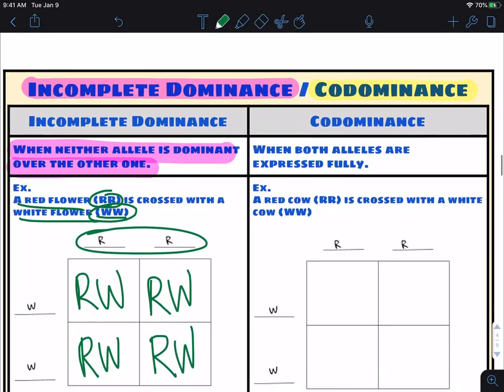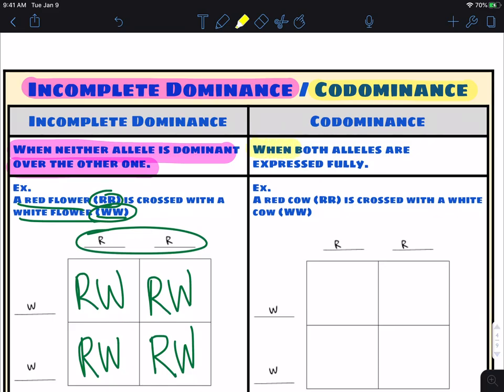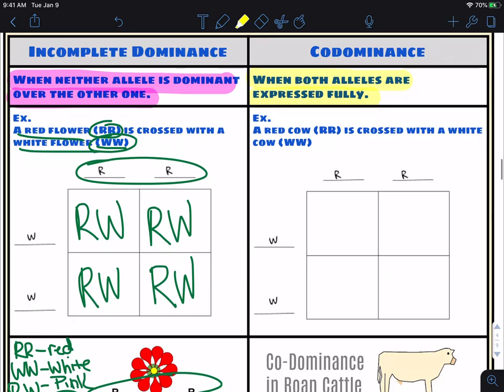Now, in something very similar, you get what is called codominance. This is when both alleles are expressed fully. It's different from incomplete. Incomplete is when neither one is dominant, but in this one is when both are expressed fully. So it actually works the exact same way. You end up with this.